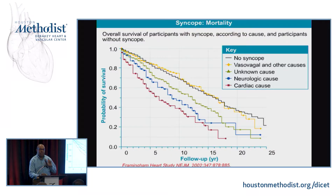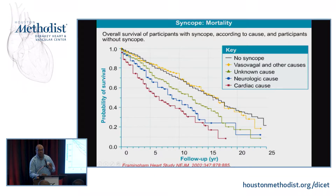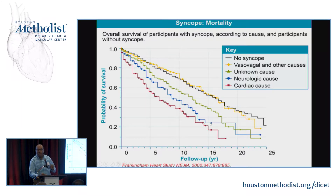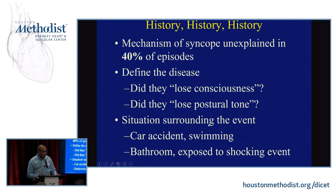The main point I want to highlight is when one looks at the probability of survival, the one thing you do not want to miss in your evaluation is a cardiac cause. So you go through your differential — vasovagal, neurological causes — but the one area you do not want to miss is an underlying cardiac cause.